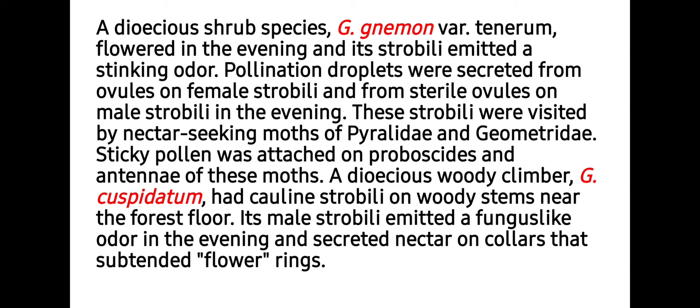A dioecious shrub species, Gnetum gnemon variety tenerum, flowered in the evening and probably emitted a stinking odor. Pollination droplets were secreted from the ovule on female strobili and from sterile ovules on the male strobili in the evening. These strobili were visited by nectar-seeking moths of Pyralidae and Geometridae; sticky pollen was attached on the proboscides and antennae of these moths. A dioecious Buddleja-like Gnetum cuspidatum had colline strobili on Buddleja stems near the forest floor; its male strobili emitted a fungus-like odor in the evening and secreted nectar on the collar that subtended flower rings.